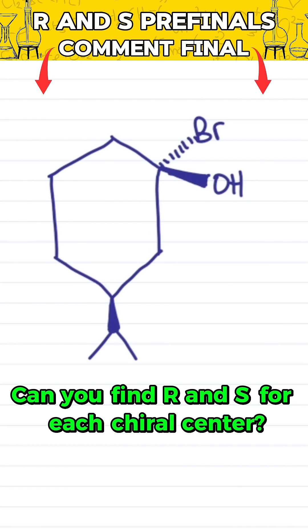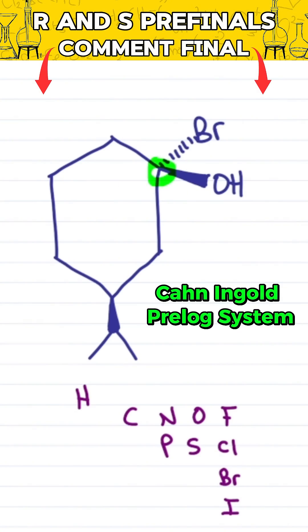Can you find the R and S for each chiral center? We'll start here using the Cahn-Ingold-Prelog system, these atoms that you've hopefully memorized,